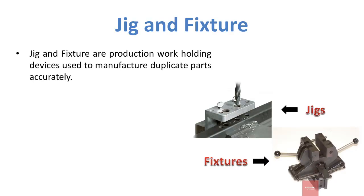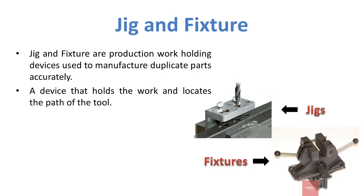Jig and fixtures are production work holding devices used to manufacture duplicate parts accurately. A device that holds the work and locates the path of the tool. These are the tools or devices which locate and fix the workpiece while performing operations.